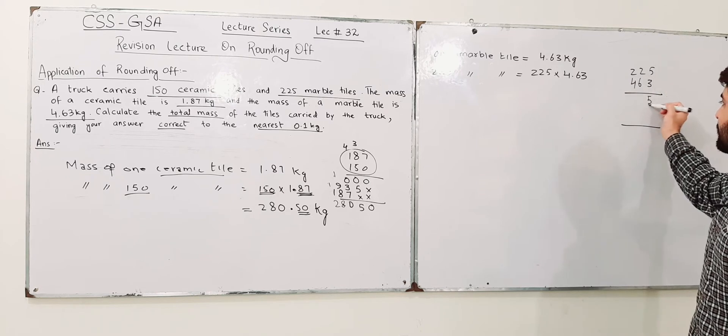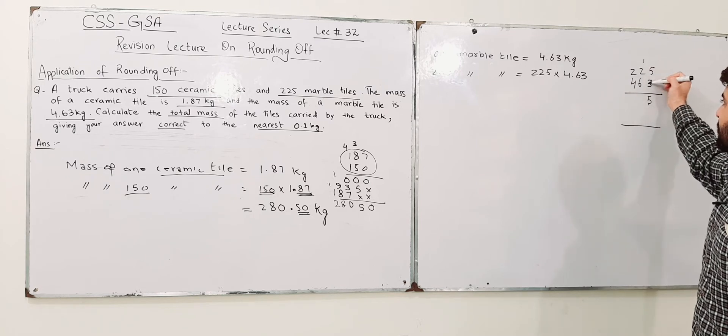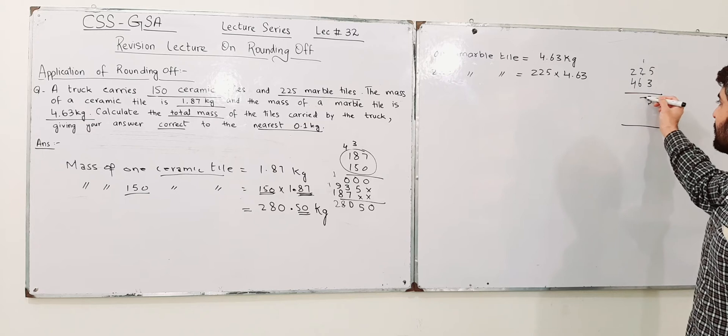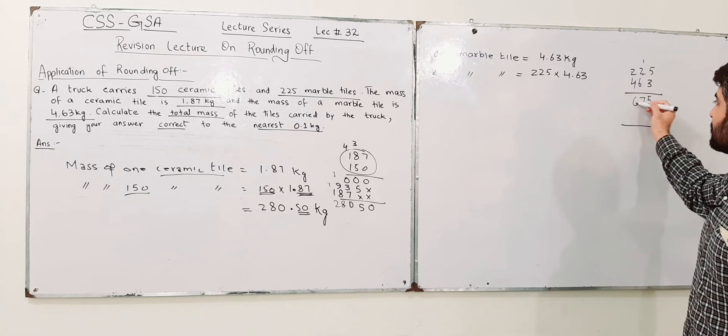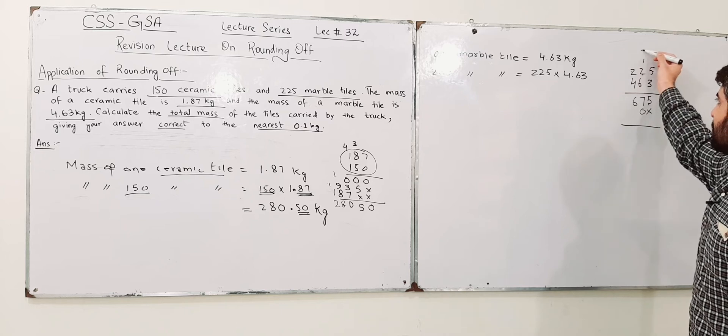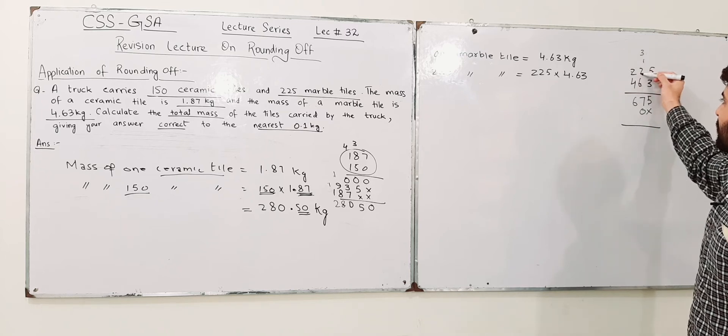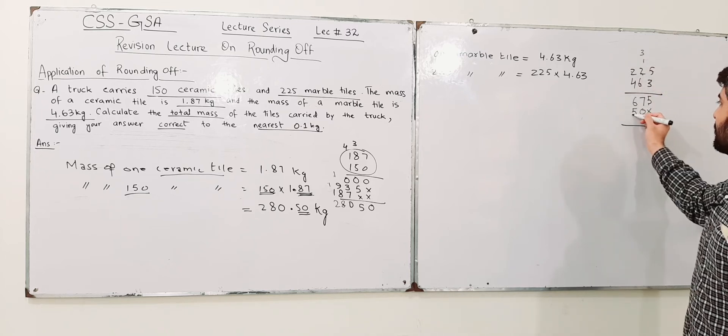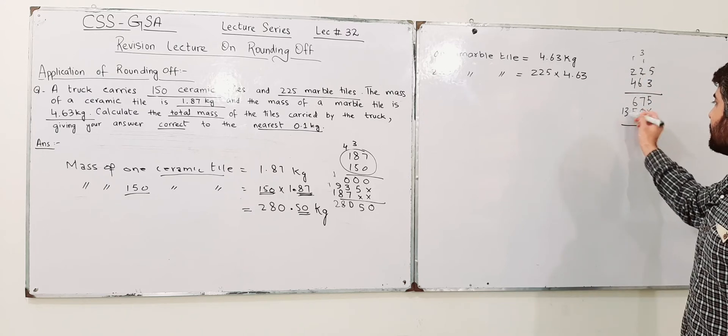3 into 5 is 15, 1 carry over here, 3 into 2 is 6 plus 1 is 7, 3 into 2 is 6. 6 into 5 is 30, 0, 3 over here, 6 into 2 is 12 plus 3 is 15, 6 into 2 is 12 plus 1 is 13.